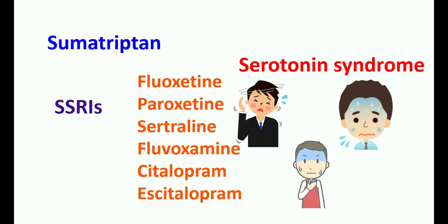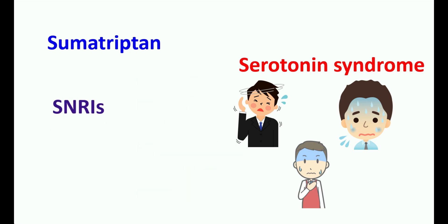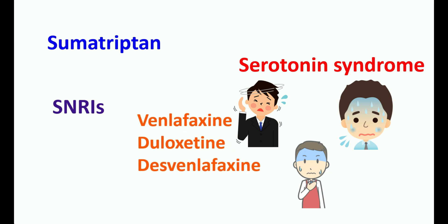Similarly, few other medications like SNRIs — serotonin norepinephrine reuptake inhibitors — such as venlafaxine, duloxetine, and desvenlafaxine are used in the treatment of depression as well as painful conditions like fibromyalgia. Therefore, there is a chance of using SNRIs along with sumatriptone, which increases the risk of serotonin syndrome.